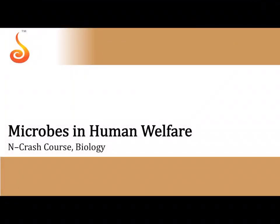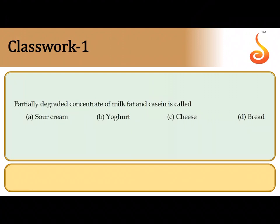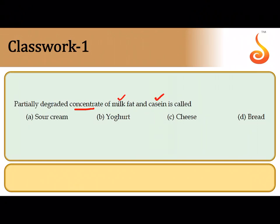Welcome to this NEET crash course. Let us go through some practice questions starting with the chapter Microbes in Human Welfare. The first question talks about a partially degraded concentrate of milk fat and casein. Casein is a protein, and this combination of milk fat and protein is collectively referred to as cheese, so the correct answer is option C.